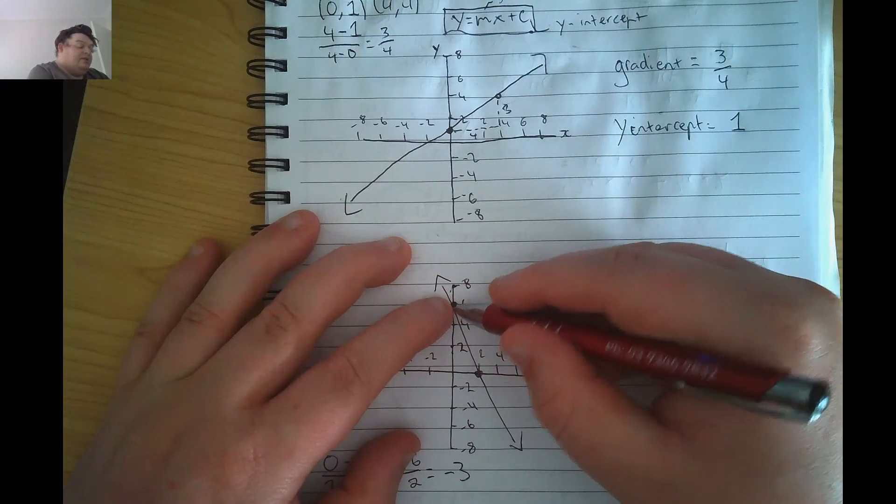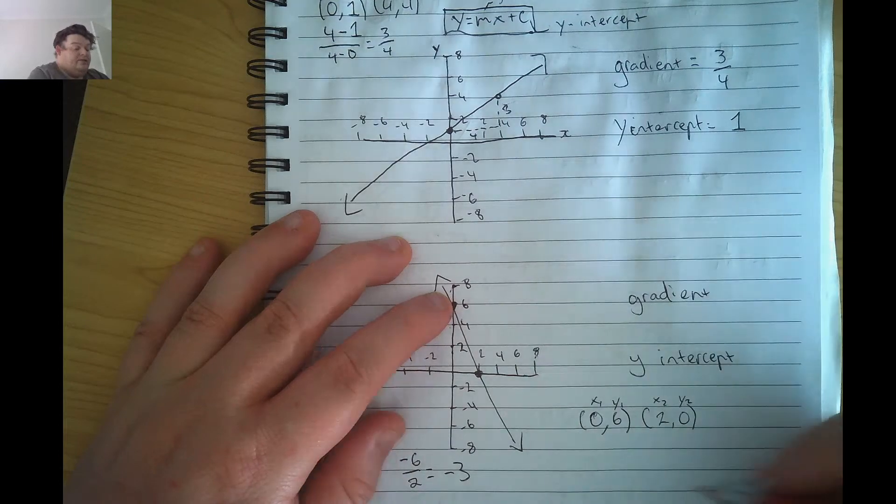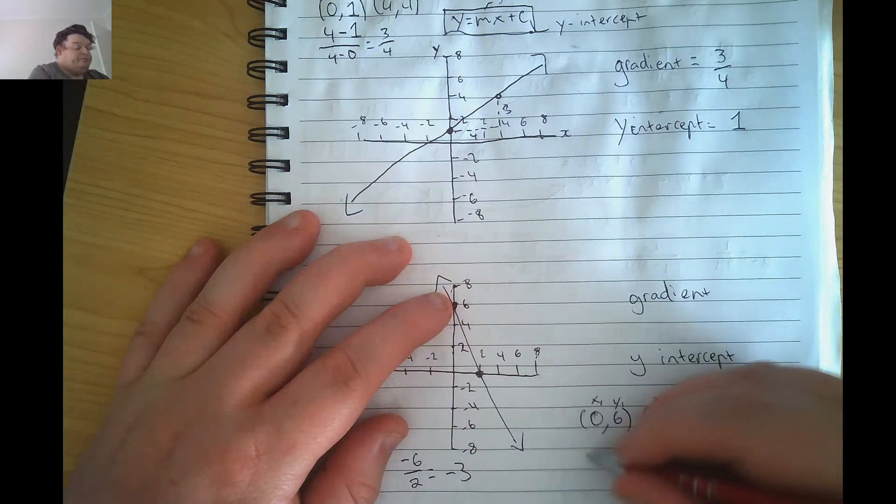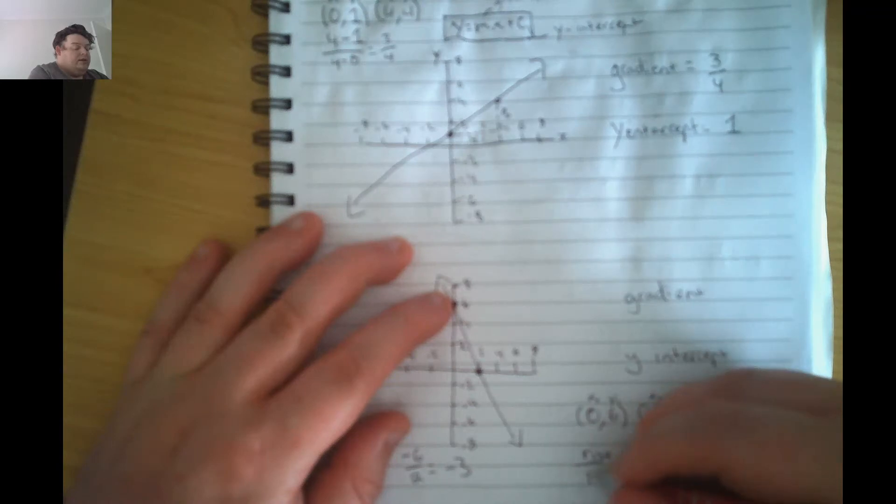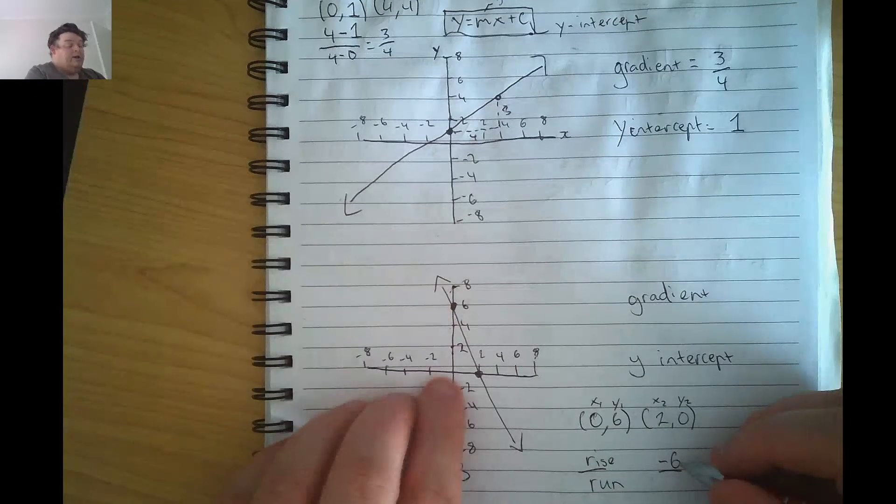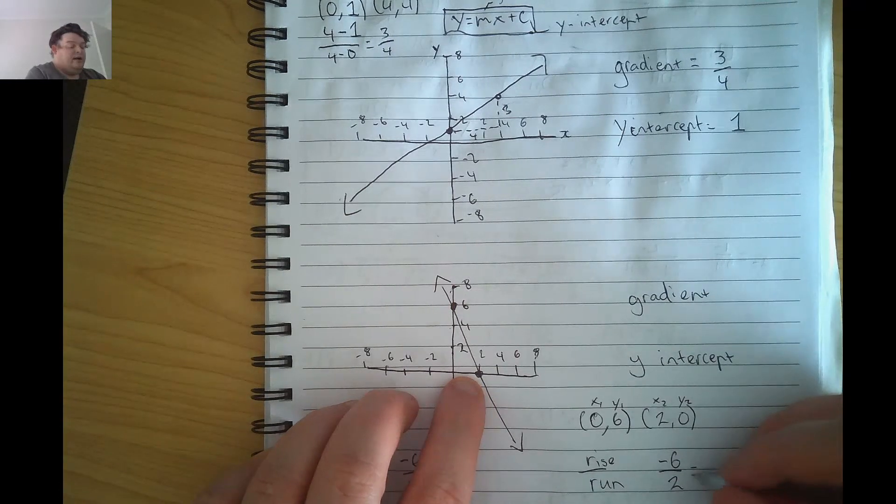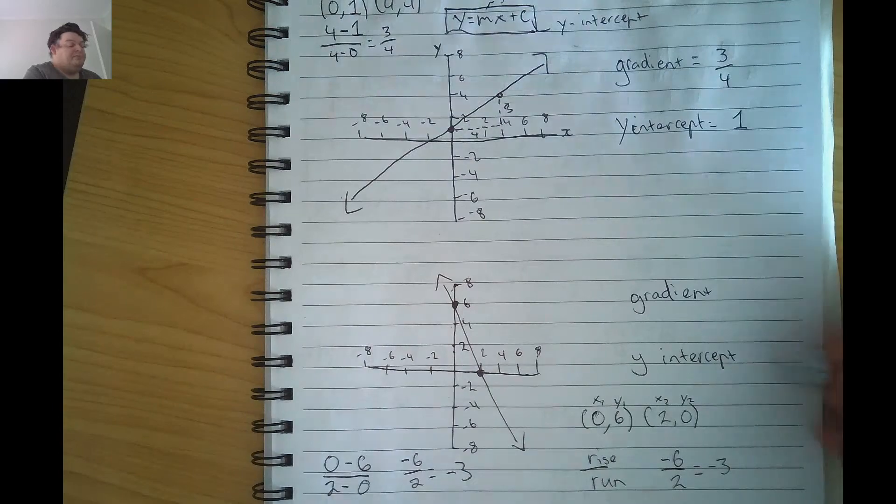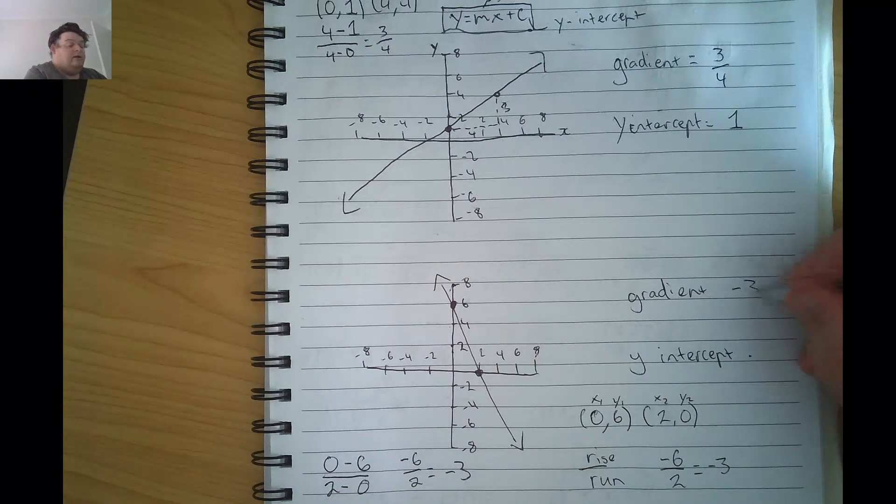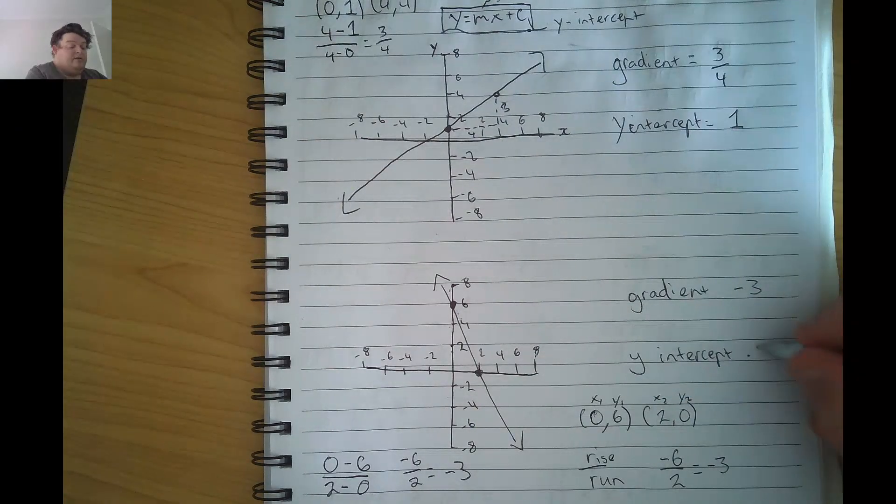So the rise in this case, it goes from 6 to 0. So our rise over run is negative 6 divided by our run. How much does it go across? It goes across 2. So our answer is negative 3. That's our gradient. Our y-intercept is where it crosses the y-axis. So in this case, it's 6.